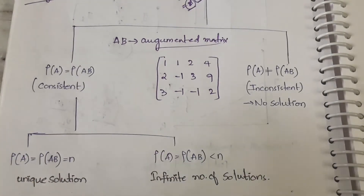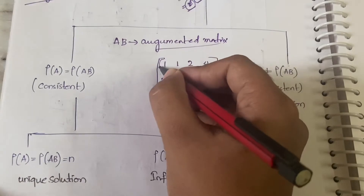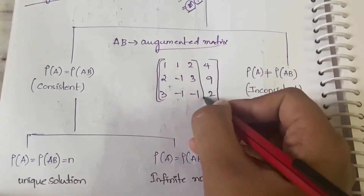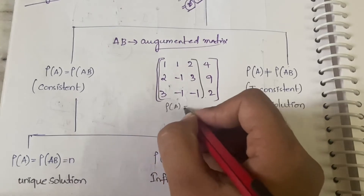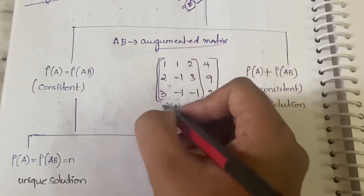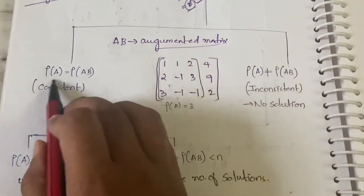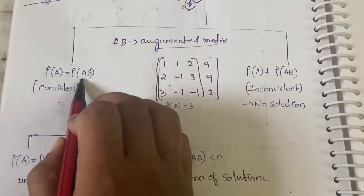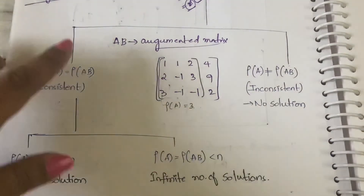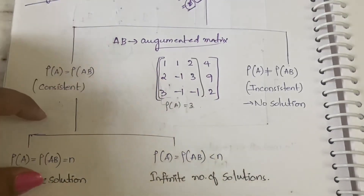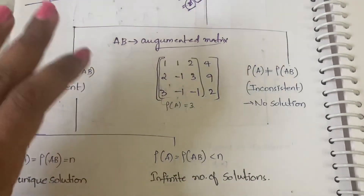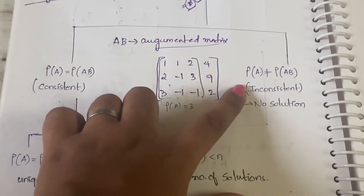When calculating rank you get both the rank of A and the rank of AB. Suppose rank of A equals three and rank of AB also equals three — both are equal to each other. When rank of A equals rank of AB, that situation is called consistent, and from there we get two further subcategories.